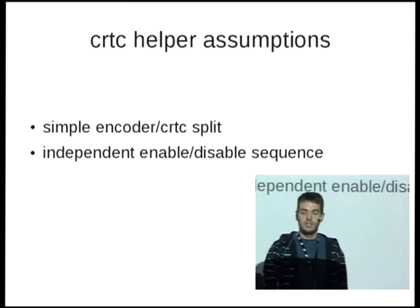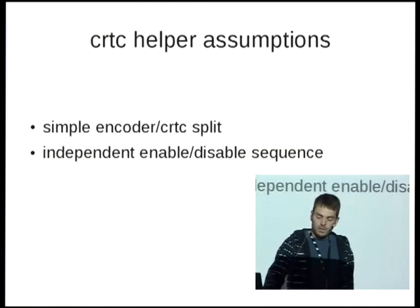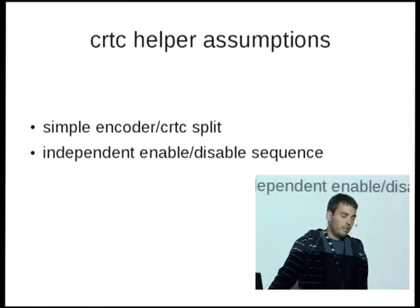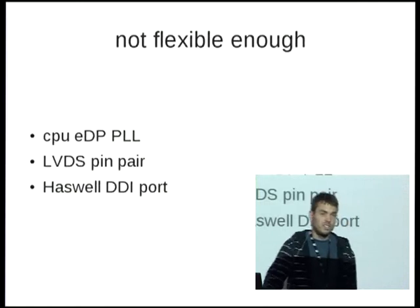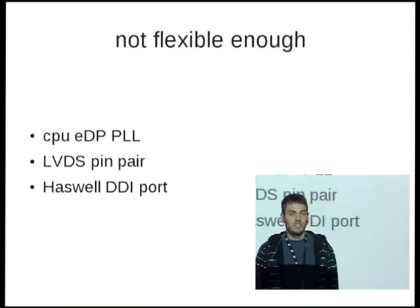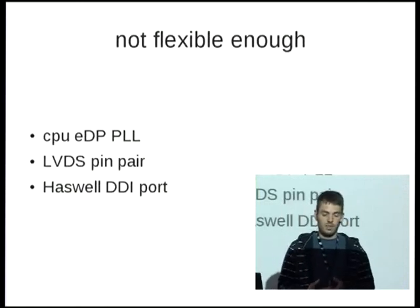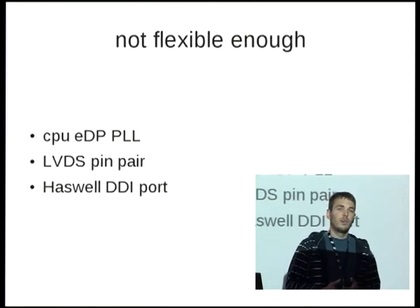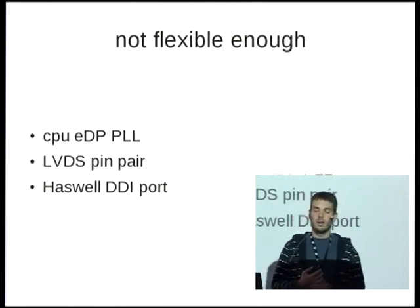So you can disable a bunch of encoders getting pixels from a CRTC, let the CRTC keep running, and enable those encoders on another CRTC. That's all fine with the CRTC helper. The driver interface is rather simple: just one enable/disable function for CRTC and encoders, plus a mode-set function to exchange timing parameters in the registers. But let's look at the problems this poses for Intel.